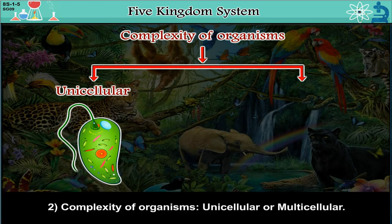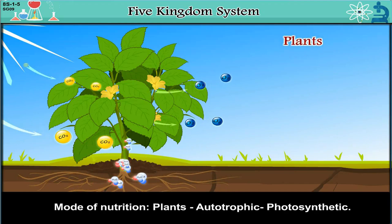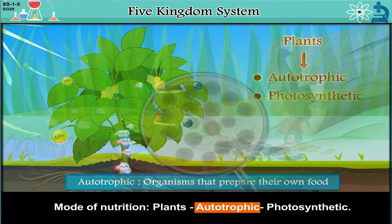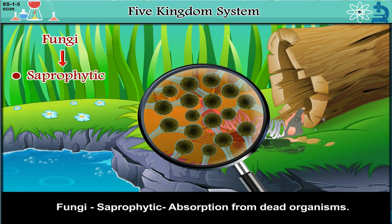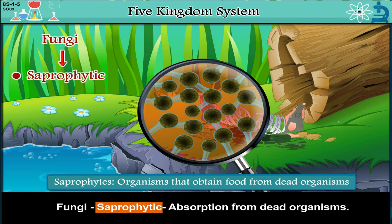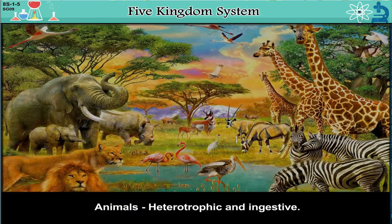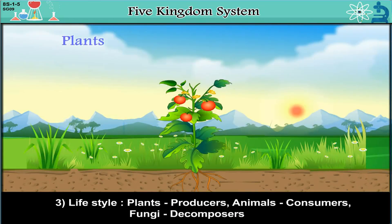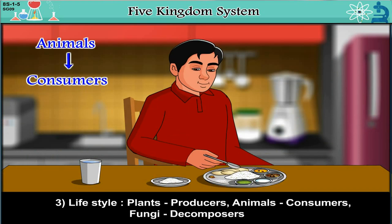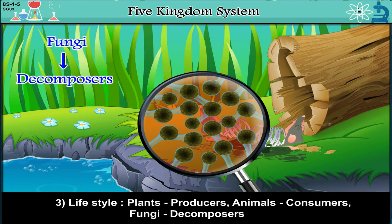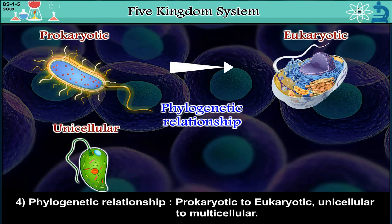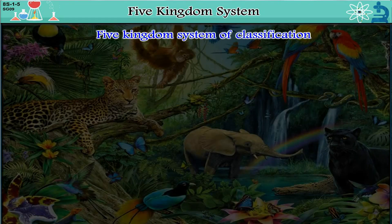Organisms are compared by mode of nutrition: Plants are autotrophic, meaning they prepare their own food. Fungi are saprophytic, obtaining food by absorption from dead organisms — saprophytes are organisms that feed on dead organisms. Animals are heterotrophic and ingestive, meaning they obtain food from other living organisms. By lifestyle: Plants are producers, Animals are consumers, and Fungi are decomposers. By phylogenetic relationship: from prokaryotic to eukaryotic, and unicellular to multicellular.